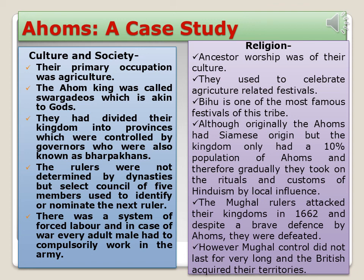The Mughal rulers attacked the Ahom kingdom in 1662, and despite a brave defense, the Ahoms were defeated. However, Mughal control did not last very long, and eventually the British acquired their territories.